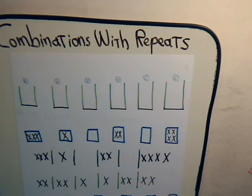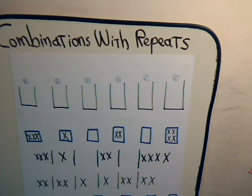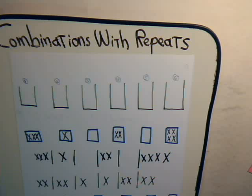In this video, we want to take some time and review the procedure we went through previously on how we devised our formula for handling combination problems when there are repeats involved. The reason for doing that is we want to make certain we're comfortable with it, because in the next video we're going to consider the same identical problem from the approach of using generating functions to solve it, which turns out to be a much more powerful approach. But for now, let's take a brief review of what we covered in previous videos.